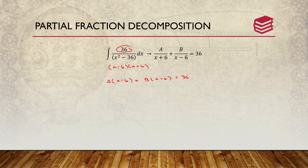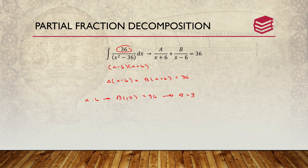Now we find A and B by substituting strategic x values. Setting x = 6: the A term cancels out, and B times (6+6) = B·12 = 36, so B = 3. Setting x = -6: the B term cancels, and similarly A = -3.